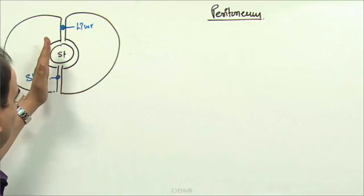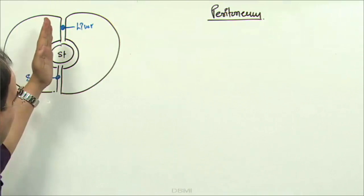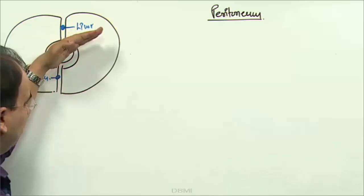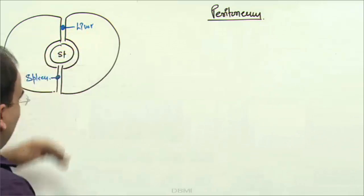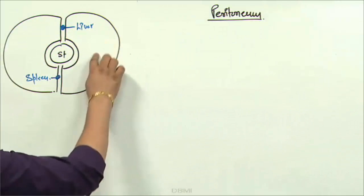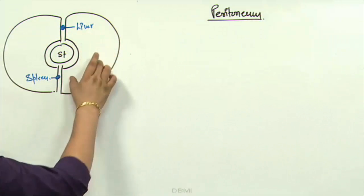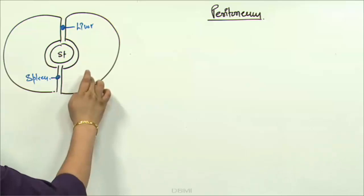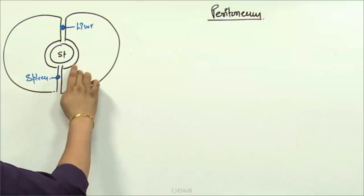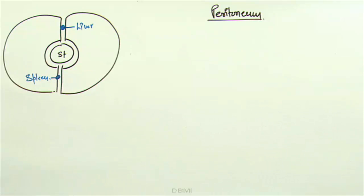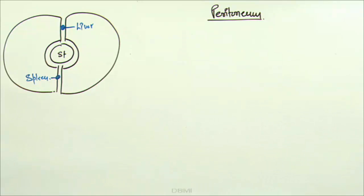So from a developmental point of view: the liver rotates and comes to this side, and this right coelemic cavity is trapped posteriorly behind the stomach — and that will be called the lesser sac.